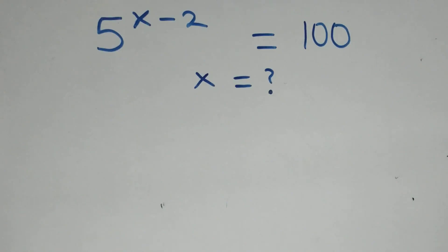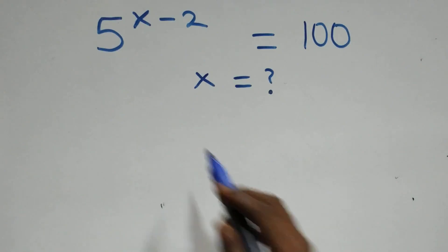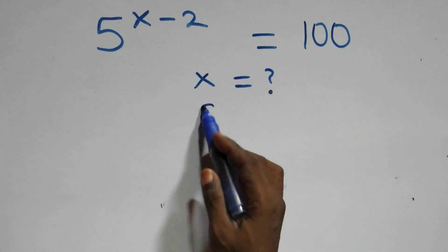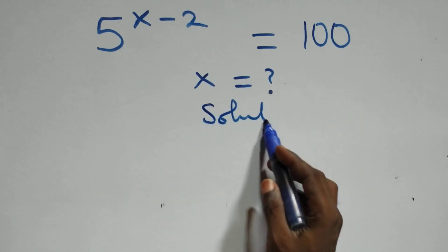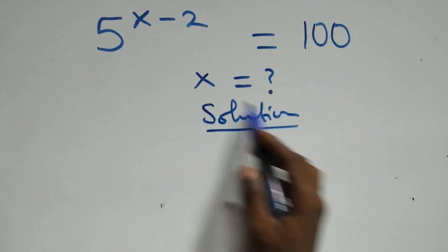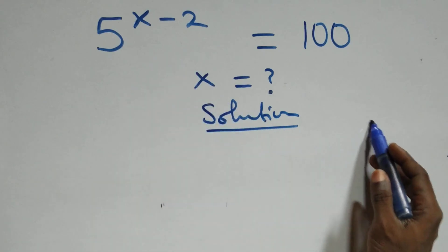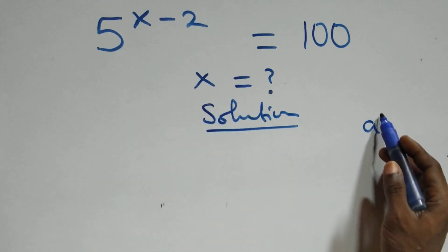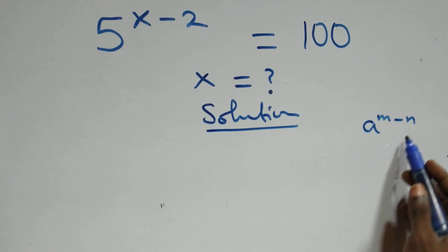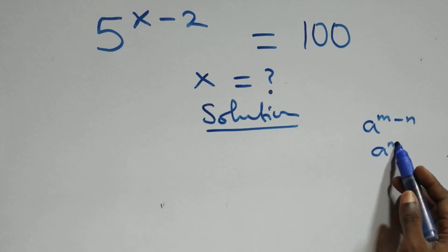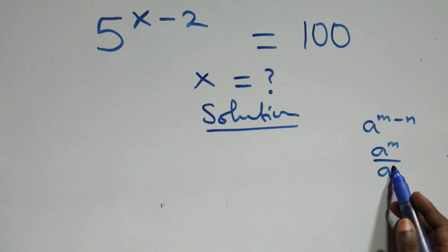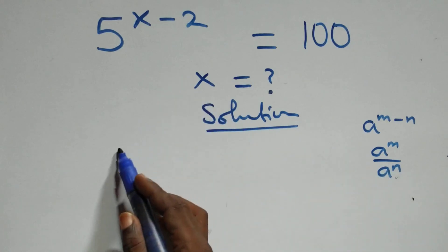Hello, you're welcome. How to solve this nice exponential equation? Solution from here. And what we have here follows from the rules of indices: when we have a raised to power m minus n, this is the same thing as a raised to power m over a raised to power n.